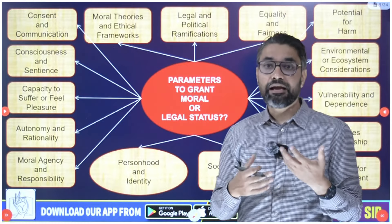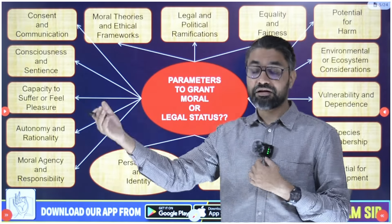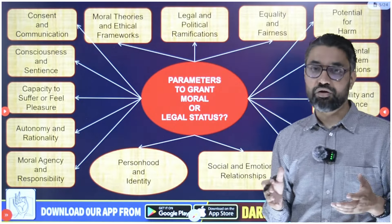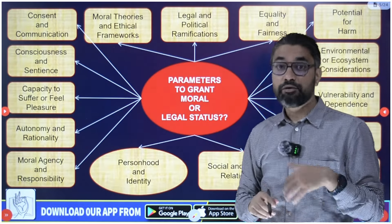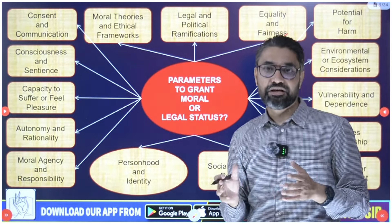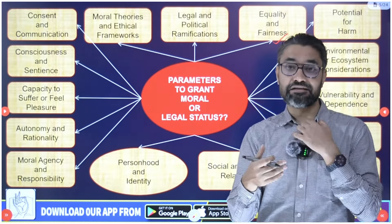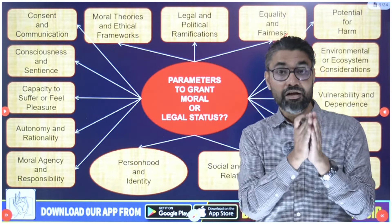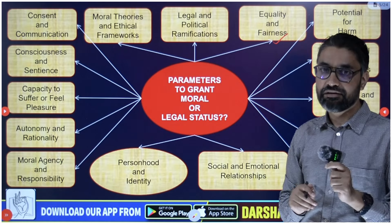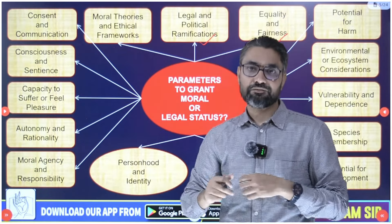The eleventh parameter is potential for harm - whether that entity is capable of causing harm. We can violate someone's fundamental rights if that person is a threat to society - serial killers and terrorists can be hanged. If AI or any biological entity we create can harm other people, species, or the environment, should we take away their moral and legal rights? The twelfth parameter is equality and fairness - are we treating that entity with equality and fairness, balancing, for example, women's rights and fetal rights equally?